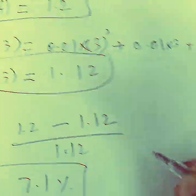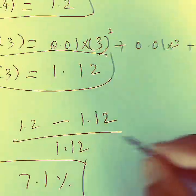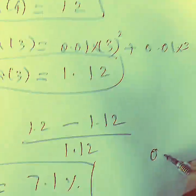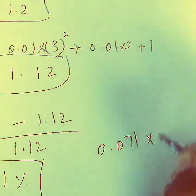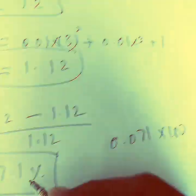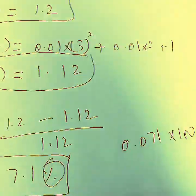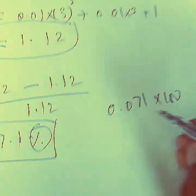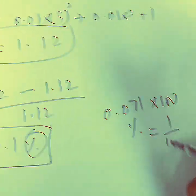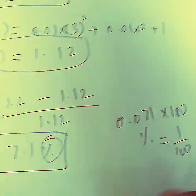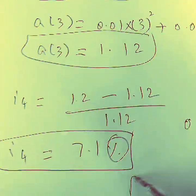So i4 = (1.20 - 1.12) / 1.12 = 0.08 / 1.12 ≈ 0.071, which equals 7.1%. Multiplying by 100 gives us a percentage: i4 = 7.1%.